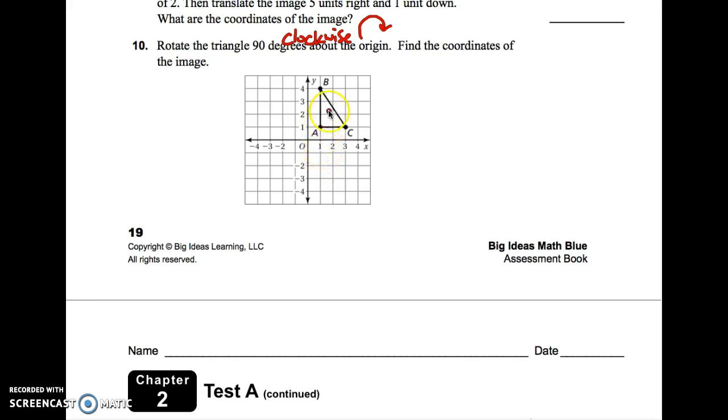So once you get that traced onto a transparency, you're going to take your transparency and move it 90 degrees. So remember, 90 degrees is one turn, and clockwise is to the right. So what you should end up with is A prime right here, B prime will be right here,